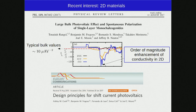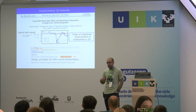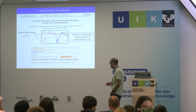Ab initio calculations suggested that decreasing the dimensionality to 2D can greatly enhance the shift contribution to the bulk photovoltaic effect. This is shown in the photoconductivity, where typical bulk values are on the order of 10 microamperes per volt squared, but due to strong Van Hove singularities, authors obtained up to an order of magnitude enhancement in 2D.